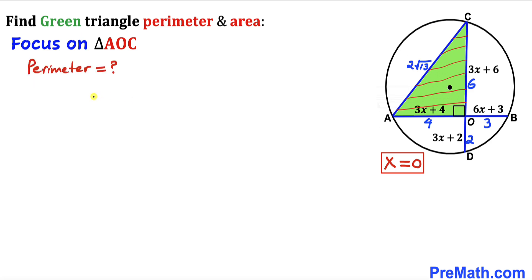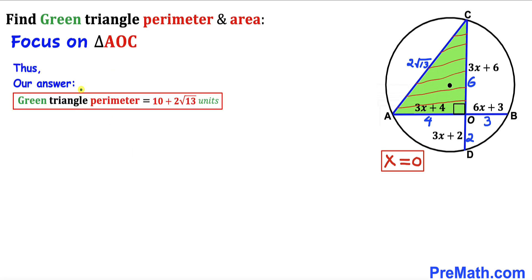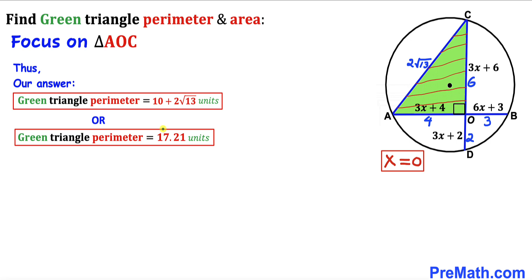Next, let's calculate the perimeter of this green triangle AOC. The perimeter is simply the sum of the side lengths: 4 + 6 + 2√13. Simplifying, the perimeter P equals 10 + 2√13 units, which is approximately equal to 17.21 units.